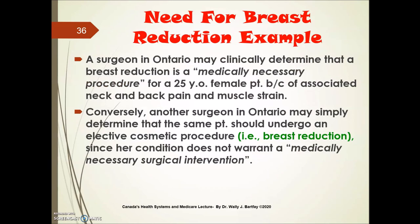Here's an example: a surgeon in Ontario may clinically determine that a breast reduction is a medically necessary procedure for a 25-year-old female patient because of associated neck and back pain, muscle strain, and problems sleeping. Conversely, another surgeon in the very same province of Ontario may simply determine that the same patient should undergo an elective cosmetic procedure known as a breast reduction since her condition does not warrant a medically necessary surgical intervention. As you can see, the term 'medically necessary' can vary quite greatly between one physician and another, even within the same province.